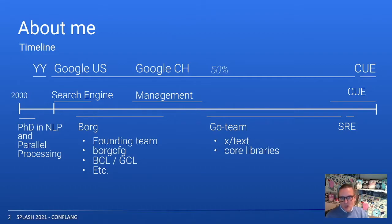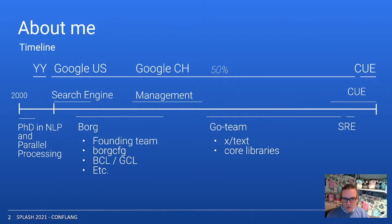After a while, I ended up working on the Go team. Towards the end of my stay on the Go team, I started developing CUE, which I'll cover later in this talk. Partly related to this work, I ended my Google career doing research on configuration-related outages. I recently left Google to work on CUE full-time.